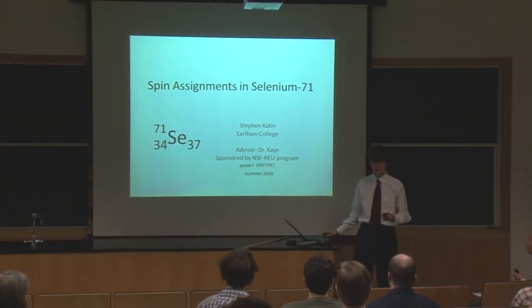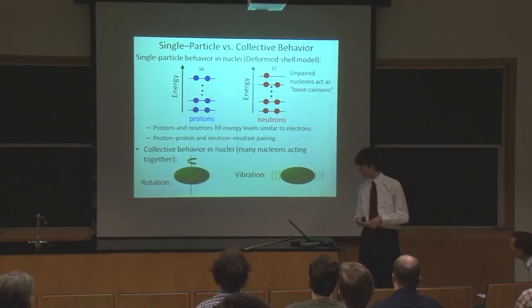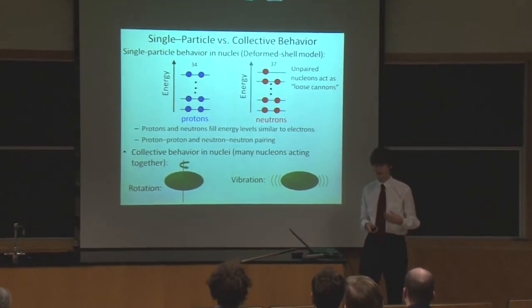Selenium-71 has 34 protons and 37 neutrons. There are two models used for describing nuclear structure. The first model is the single particle model.